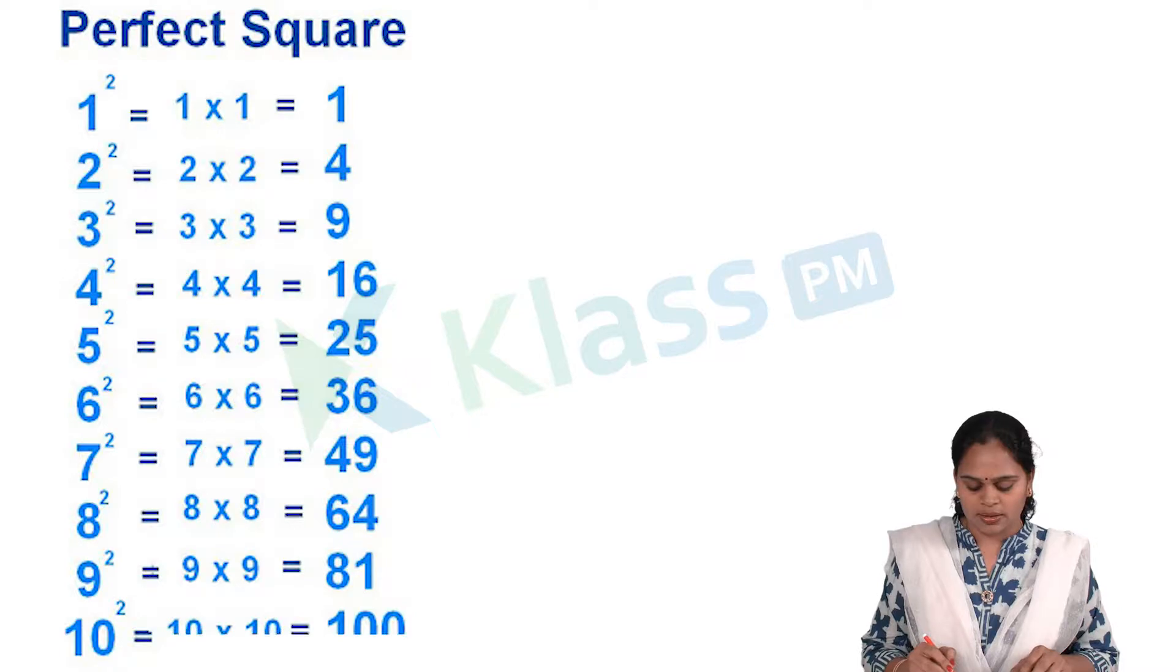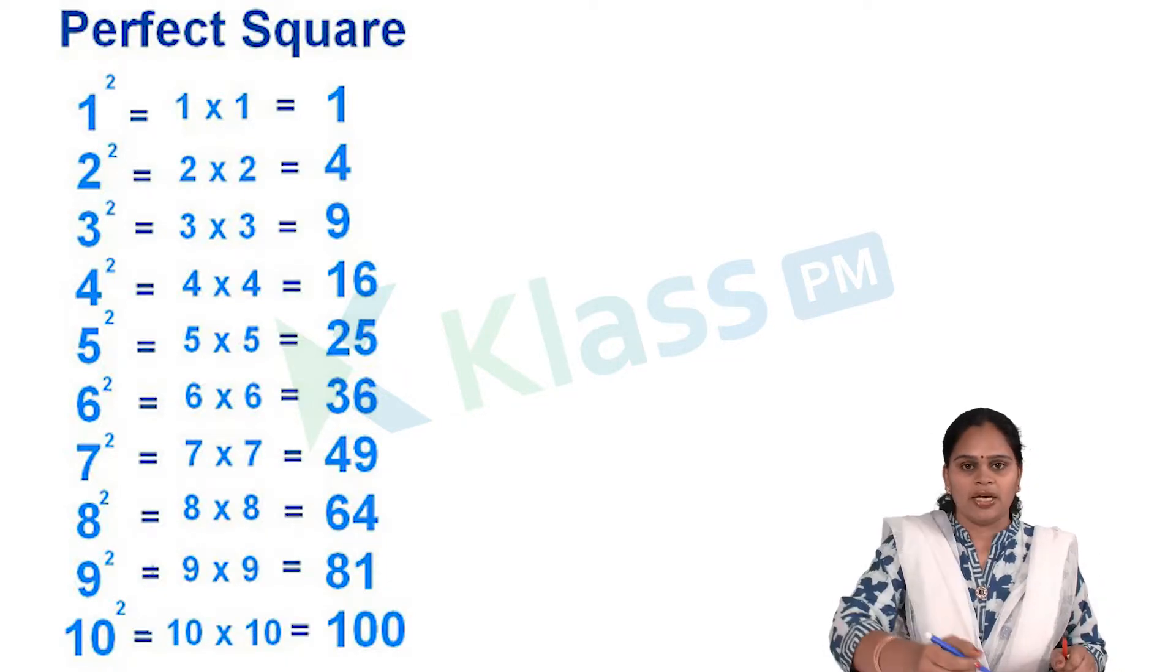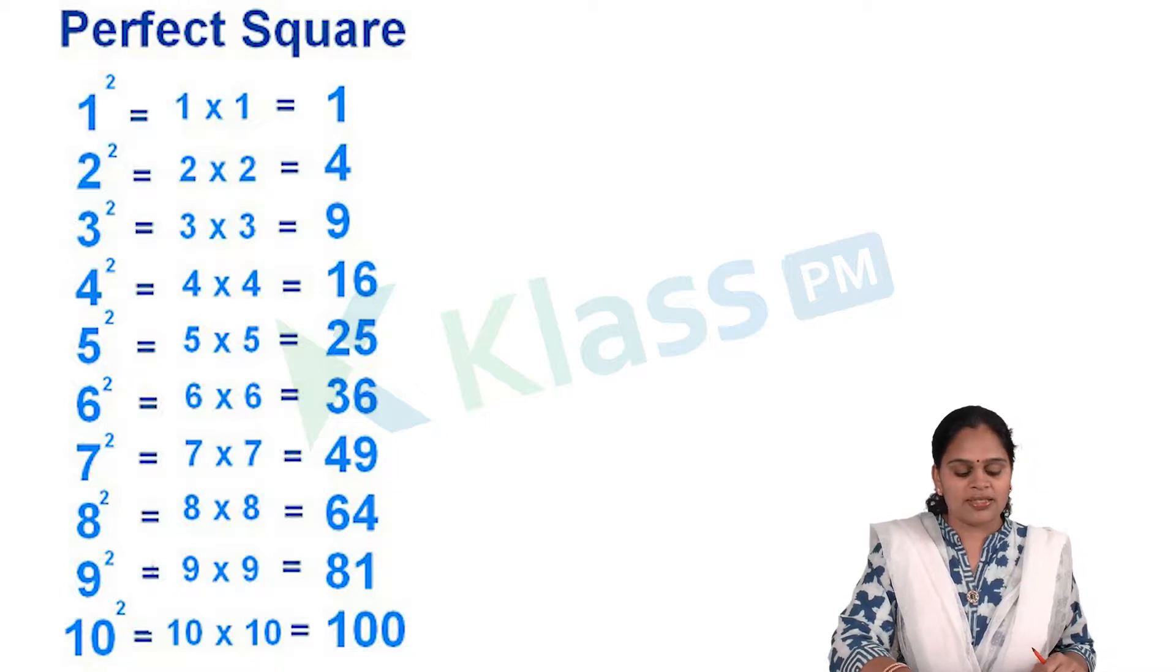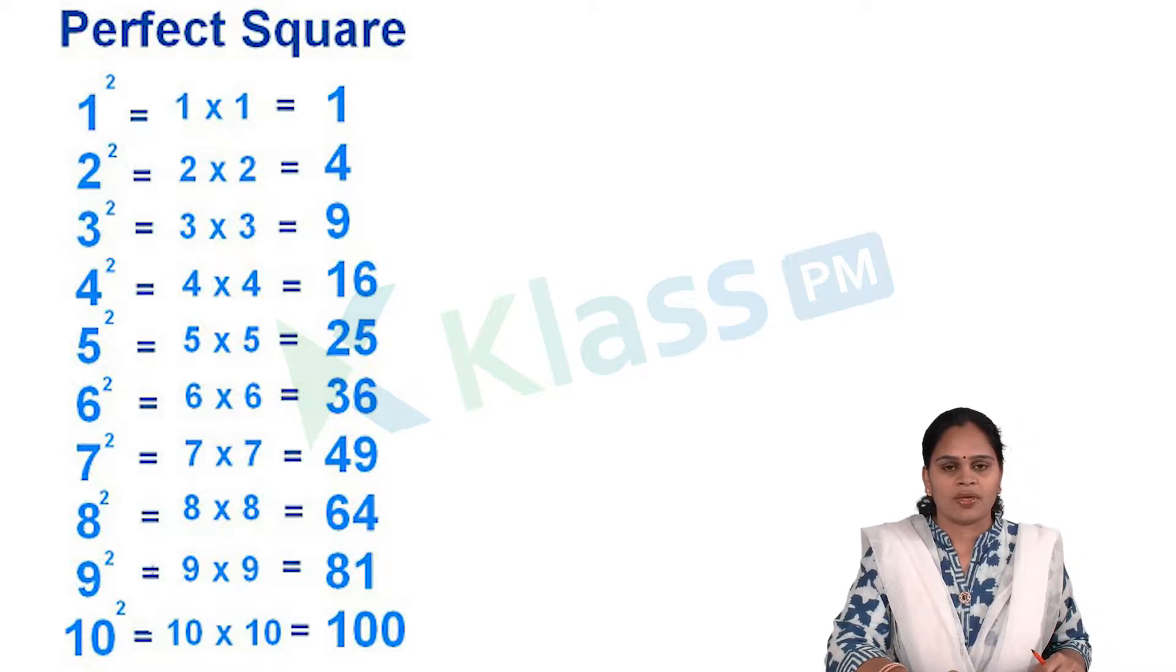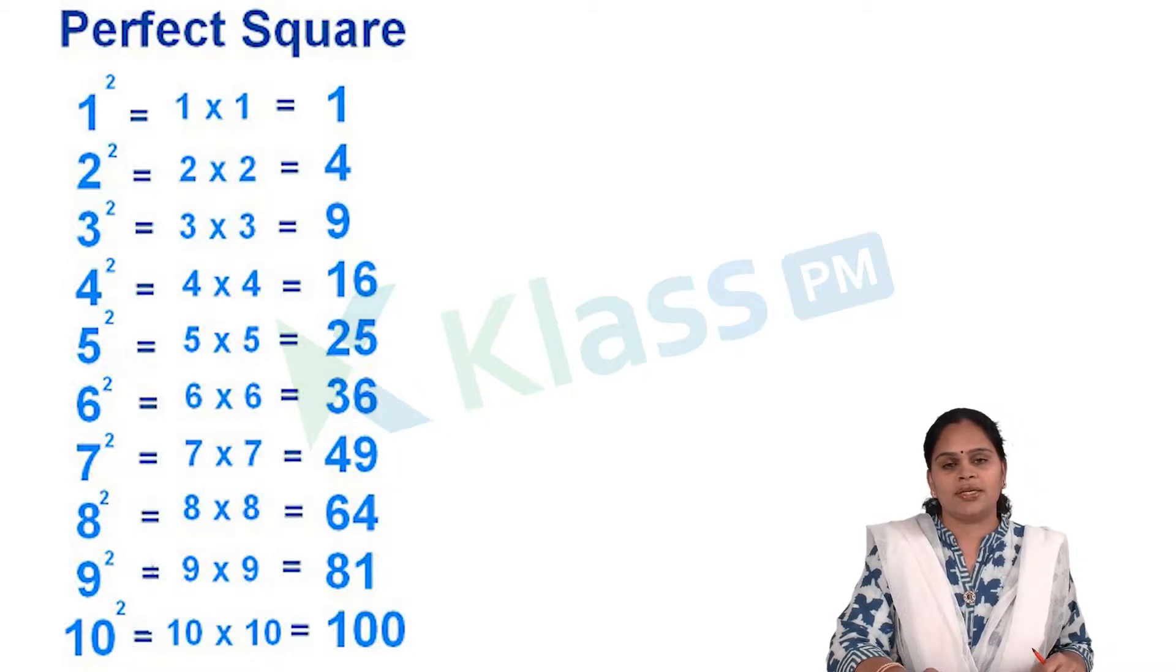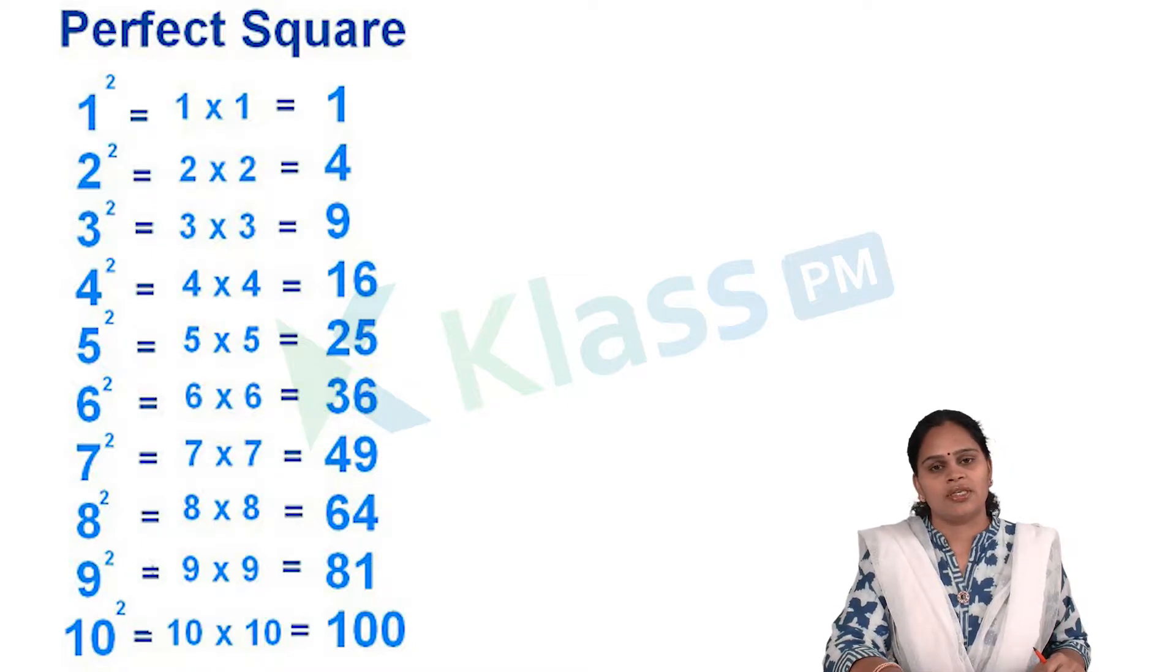10 square, 10 into 10, it's nothing but 100. Anyone can easily say about these squares. If you think about 2 digits or 3 digits or 4 digits, if anybody asks about their squares, it is very difficult for you to say.